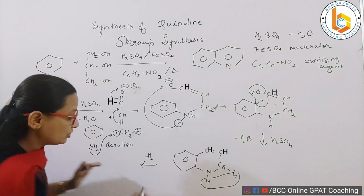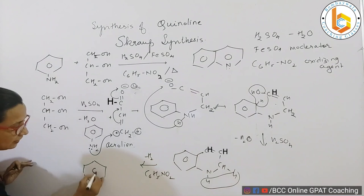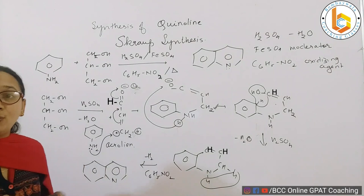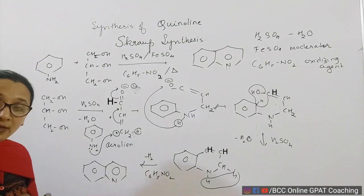Now what remains here is nothing but one, two extra hydrogens. So there is nothing but dehydrogenation, that is nothing but oxidation. This occurs in presence of C6H5NO2 and what will be formed here is quinoline.